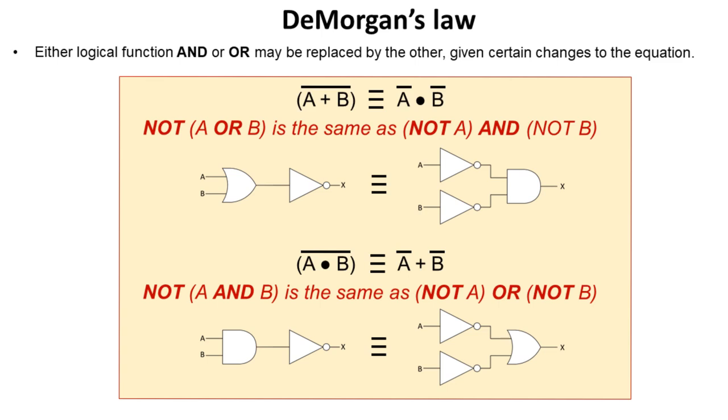What we're going to look at now is how we can use DeMorgan's Law to simplify various Boolean expressions. And why it's one of the most useful laws for doing so.